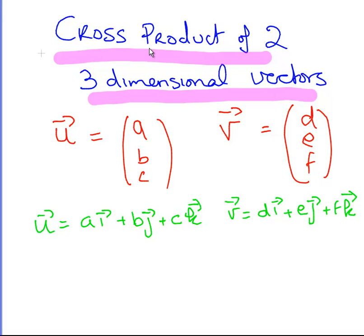In this presentation we're going to look at the cross product of two three-dimensional vectors. I have a vector U with coefficients A, B, C and another vector V with coefficients D, E, F. There are various different ways to denote a vector in three dimensions. One way is to write it as a column vector. Just underneath, I have them written in notation using I, J, and K to emphasize which direction each component is associated with.